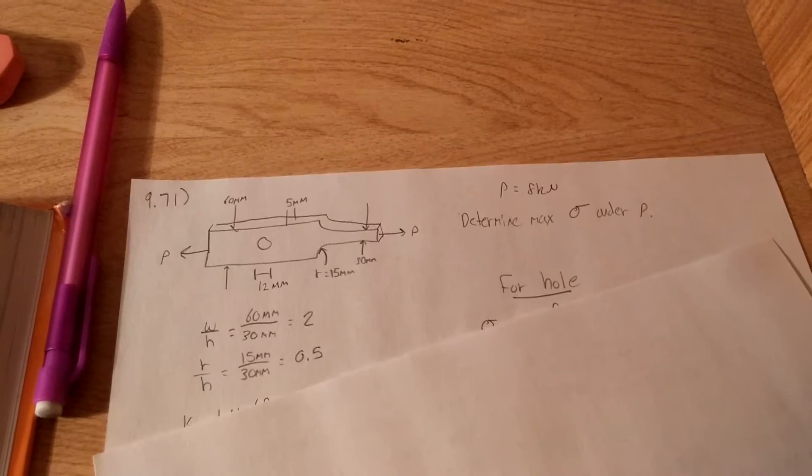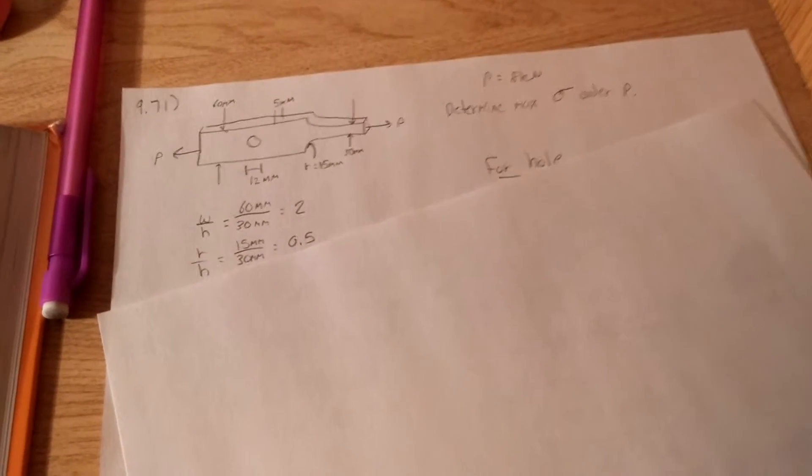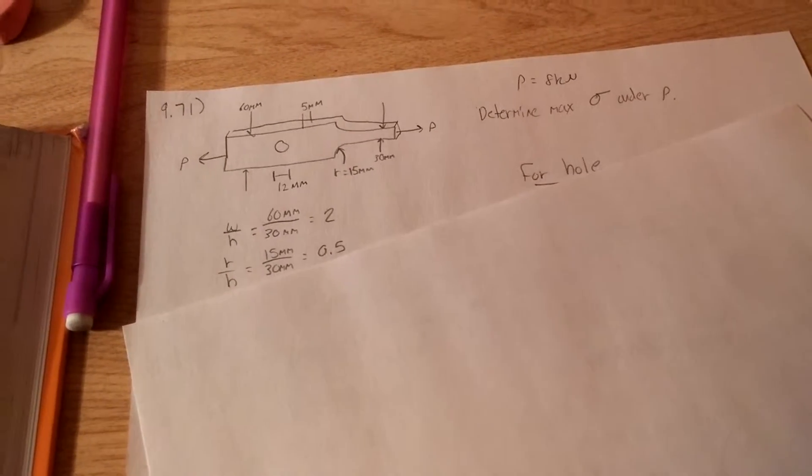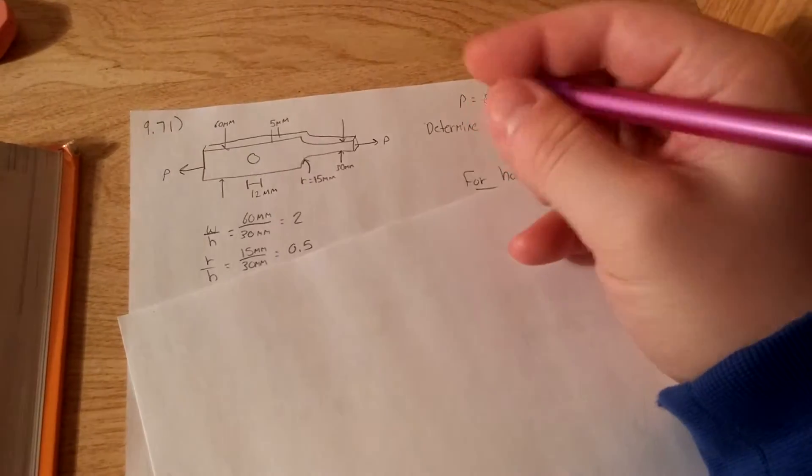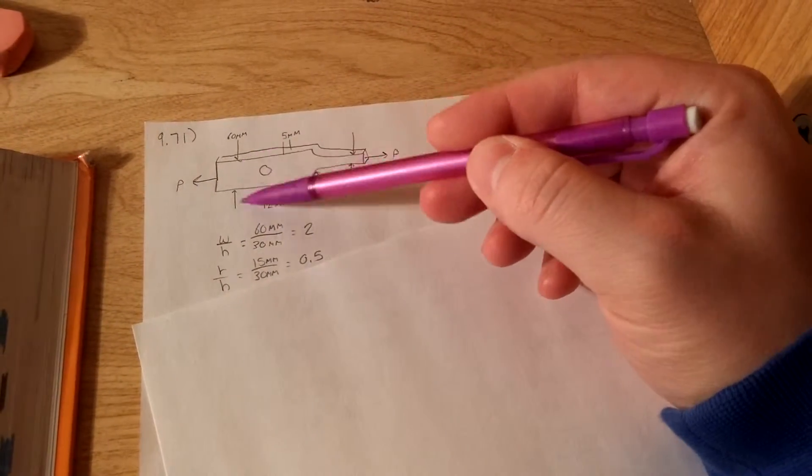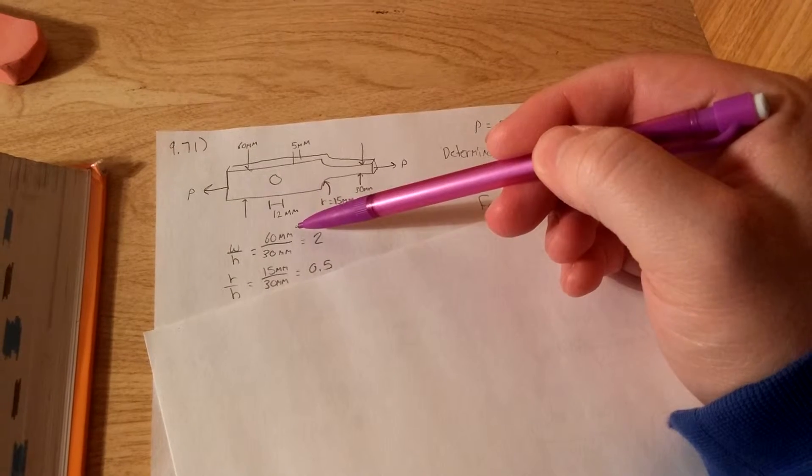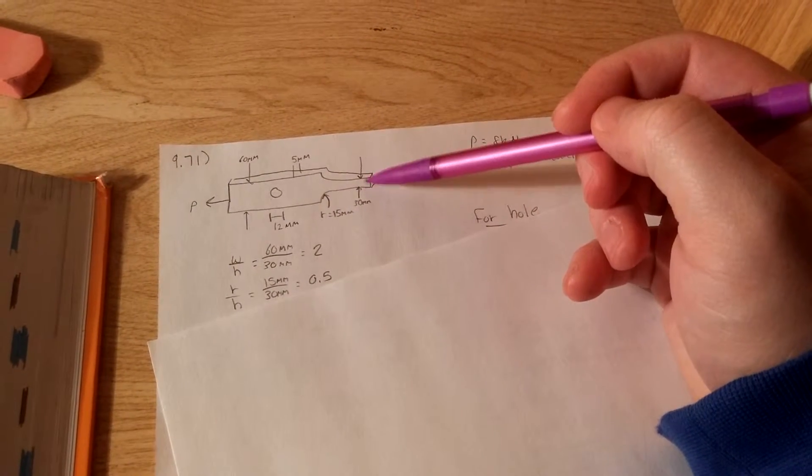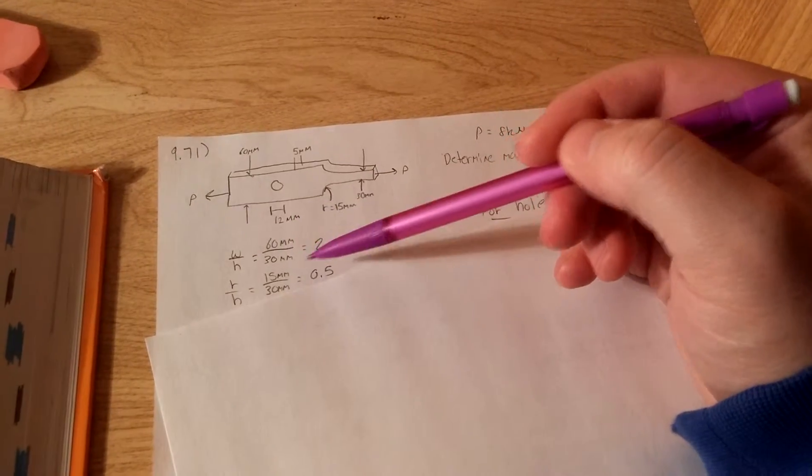So let's worry about not the hole first. We have to find what the W to H ratio is. Let me grab my pencil. W is the width, 60 millimeters. And then height of the skinnier end is 30. So 60 over 30 is 2.